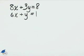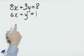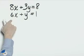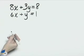We're going to solve this problem using addition. To add these two equations together, we need to get the coefficients of one of these variables so that they are opposites.